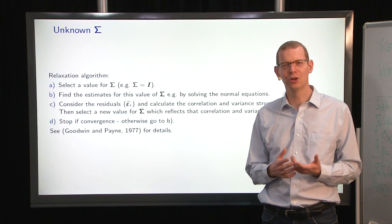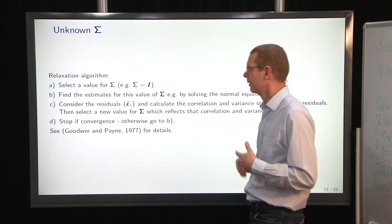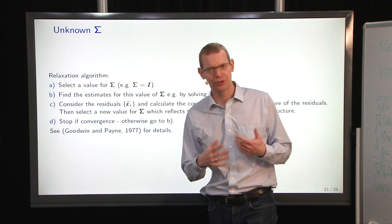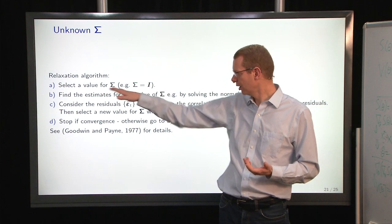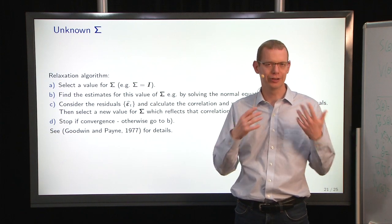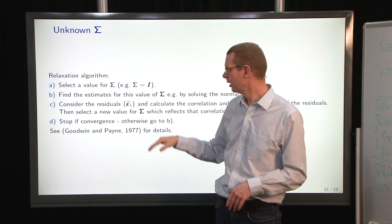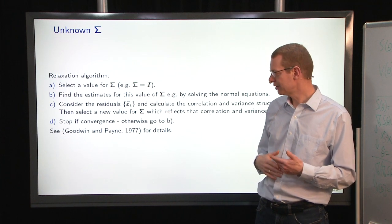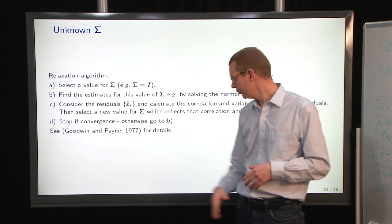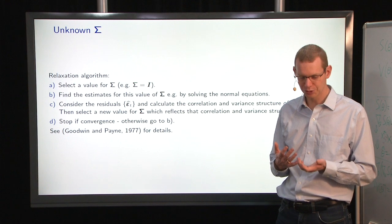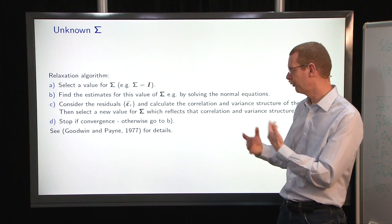Now, in practice, you do not know sigma. So, what do you do? There are different ways. One way to obtain an estimate of sigma is to use the so-called relaxation algorithm, where you just start with some estimate that could be just the identity matrix, or you could look at the correlation structure of a simple model. That's effectively what you do here. Then you, given this structure here, then you find the estimates of your parameters in the model, then you look at the residuals from that, and then you look at the correlation structure from those residuals, and then you select a new sigma, which then reflects what happened there.